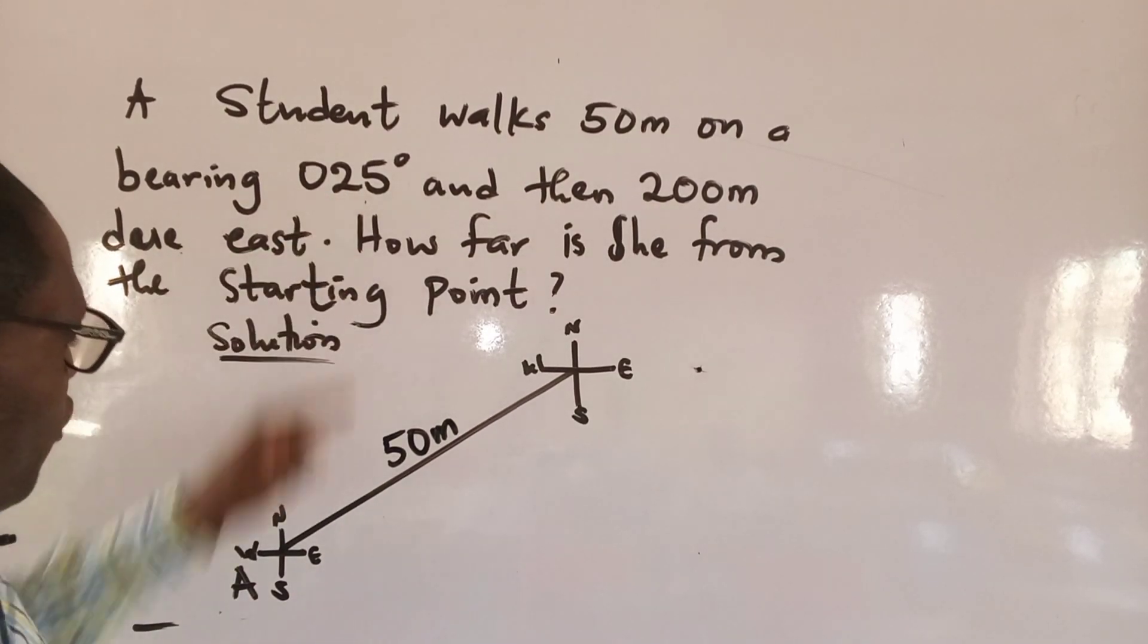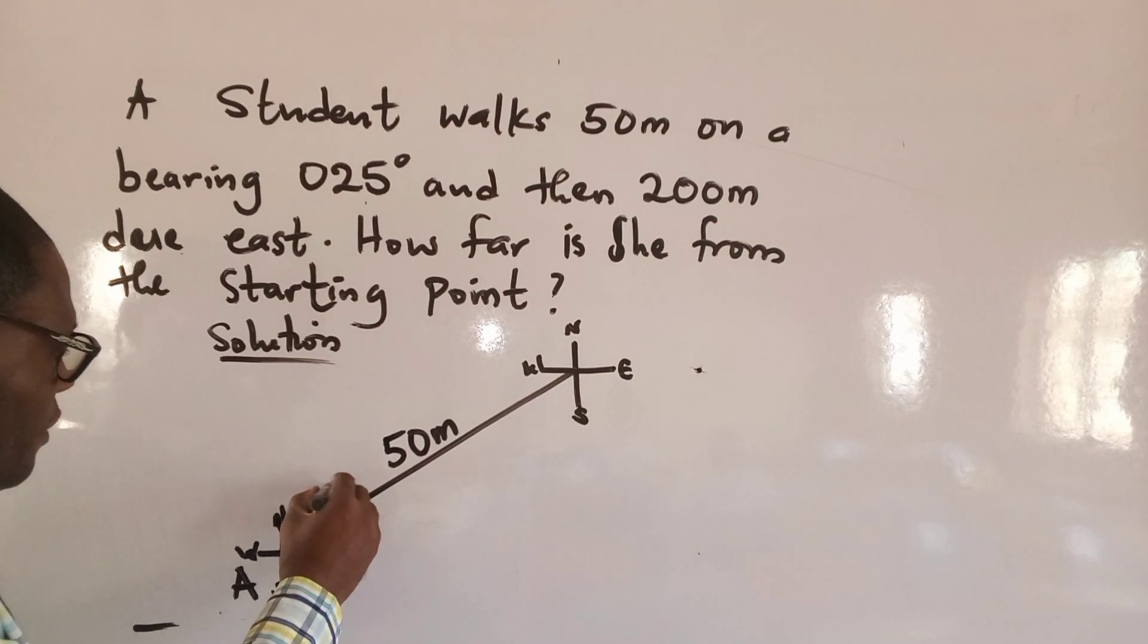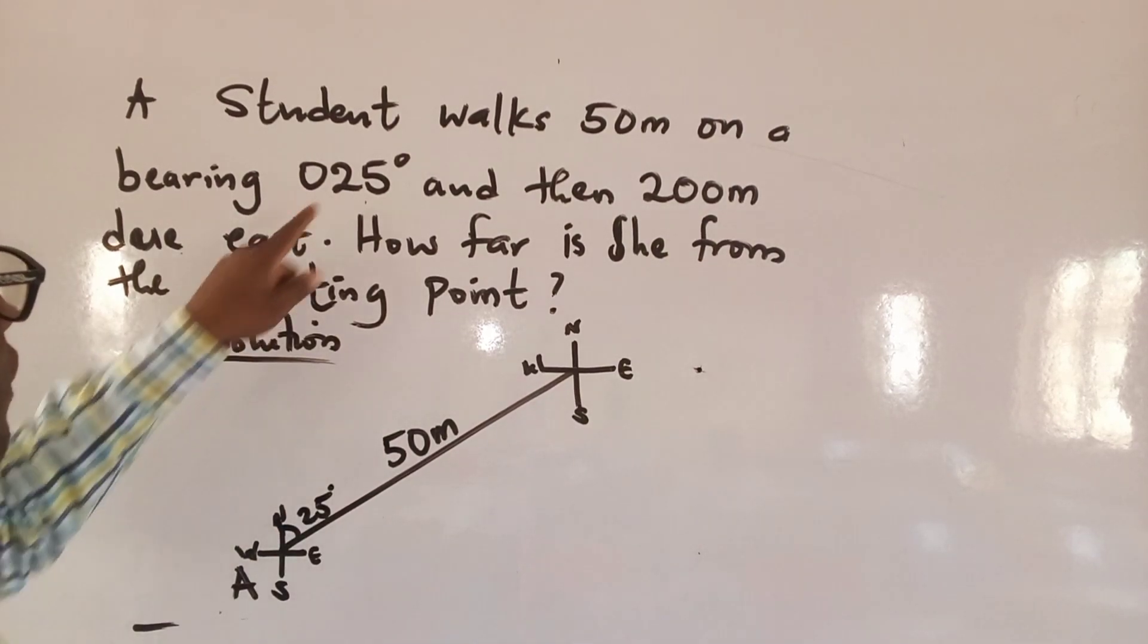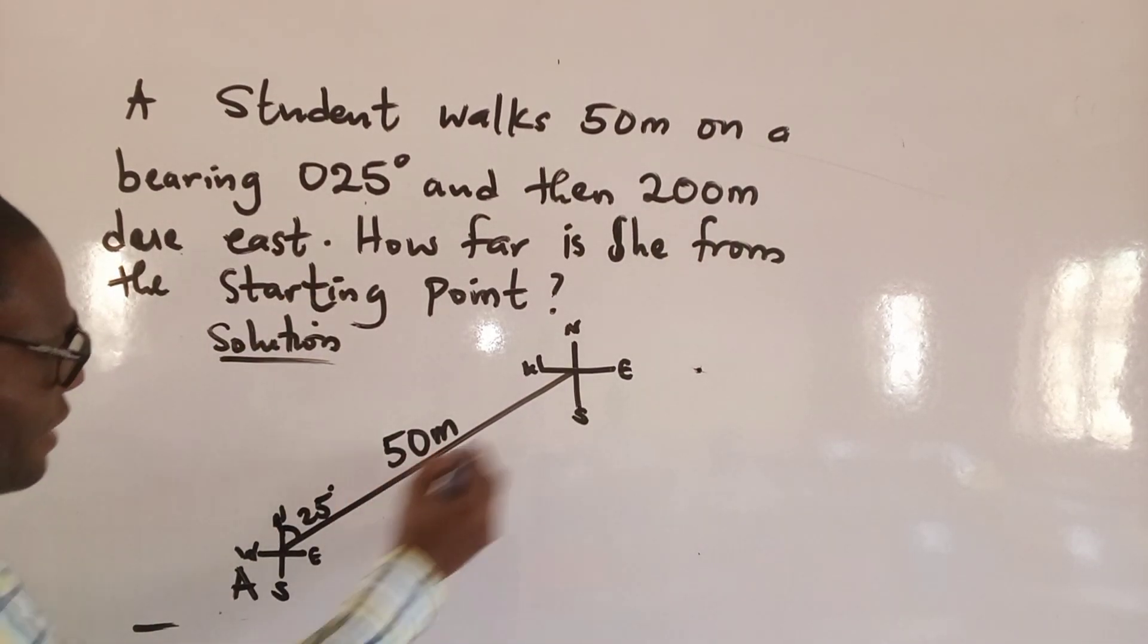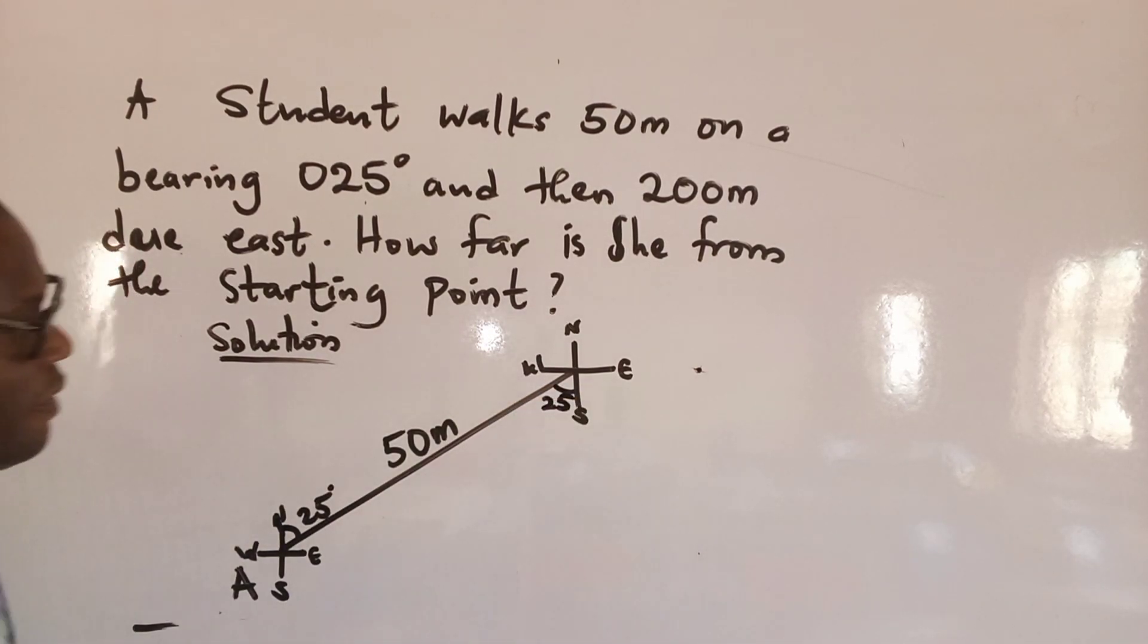Now on the bearing of 25 degrees. Here is 25 degrees. That means that here is an alternate angle and we have 25 degrees there.